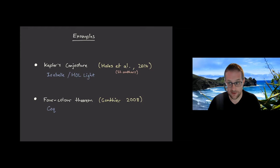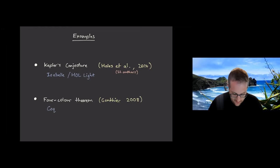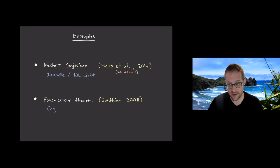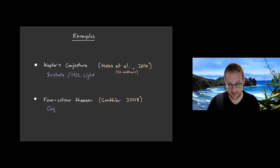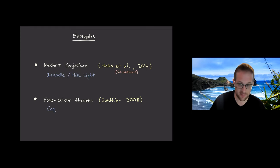Because of this formalized proof, Kepler's conjecture is in my opinion one of the most trustworthy theorems in mathematics. Closer to home, the four-colour theorem was formalized by Gonthier in 2008. I was quite surprised to learn that a formalized proof existed — ever since I was an undergrad, the four-colour theorem had a slight whiff of controversy because of the circumstances of its proof in the 70s. The existence of a formalized proof means I can be more confident in its truth than in a 100-page proof I'd written myself.